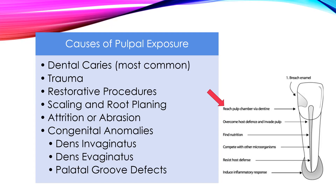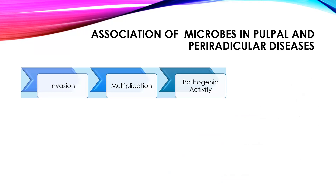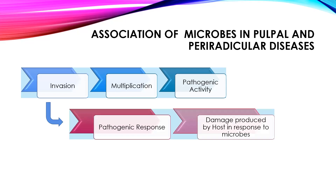Once the microorganisms breach the enamel and reach the pulp chamber via dentin, they overcome the host defense and invade the pulp, competing with other organisms for nutrition and resisting the host defense. They finally reach the periapical region and cause an inflammatory response. This starts with invasion of the bacteria into the pulp; when they find a conducive environment, they multiply and have pathogenic activity, which results in a pathogenic response from the host. This pathogenic response induces damage in that localized region in response to the microbes.